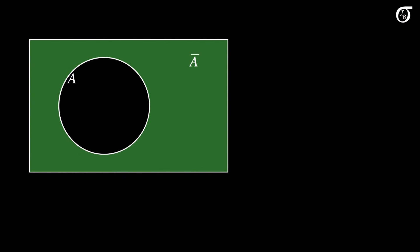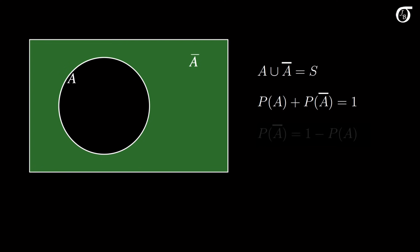Here's a Venn diagram representation of the sample space. The black circle represents event A, and the green region represents A complement — everything in the sample space that is not in A. A and A complement are mutually exclusive events, and together they make up the entire sample space. The union of A and A complement is the entire sample space, and since their probability sums to 1, the probability of A complement is 1 minus the probability of A. We'll often use this complement rule in probability problems.